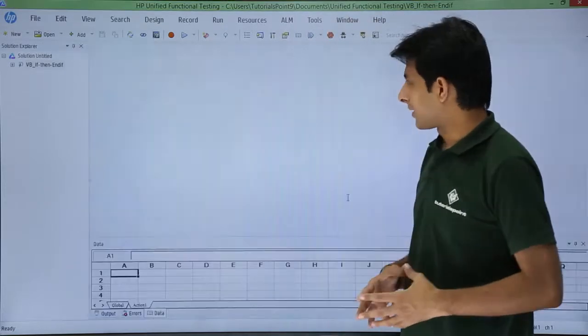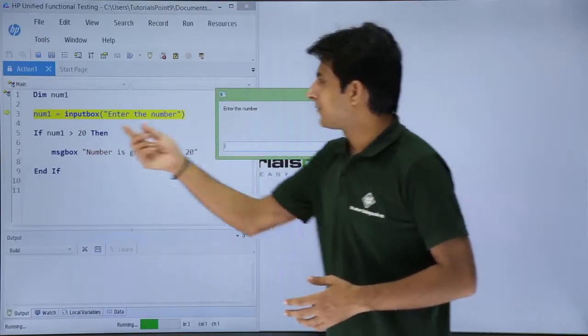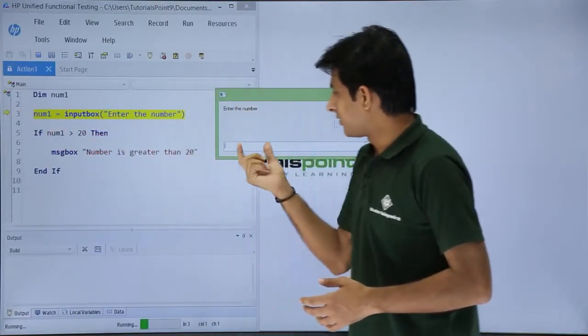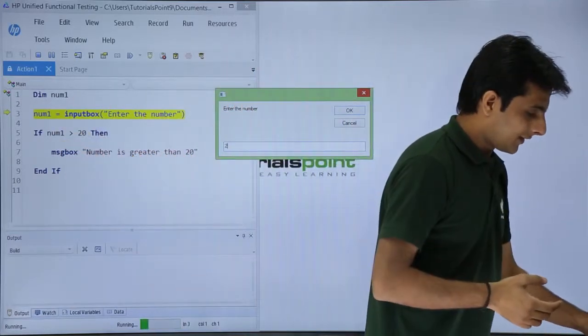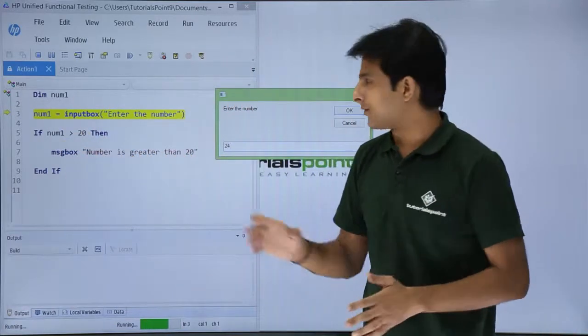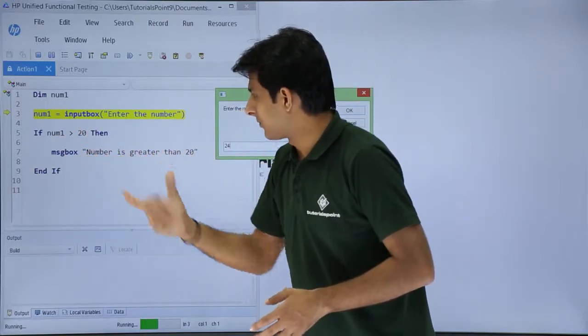If you see, it is executing this statement. Whatever I input in this input box will be stored in num1. I will input 24, which is greater than 20 obviously. So if this condition is true, it will display this message.